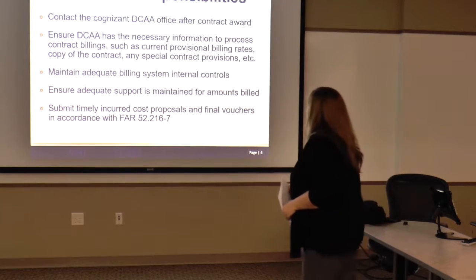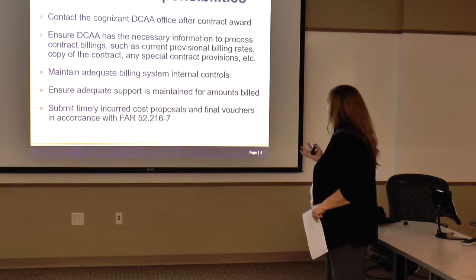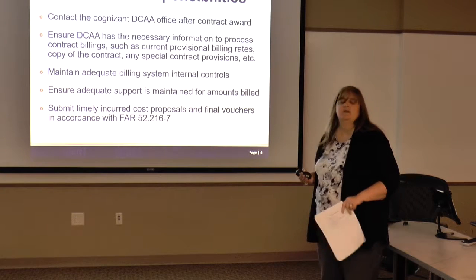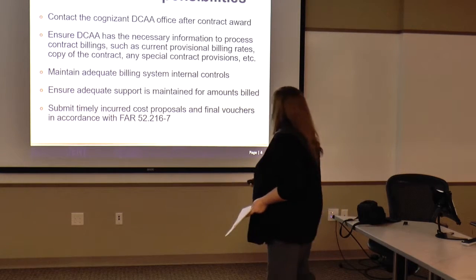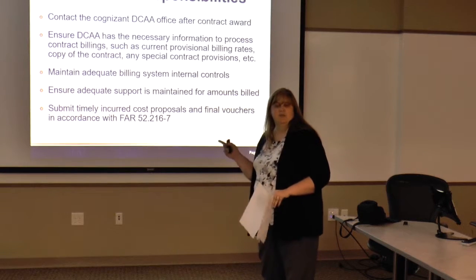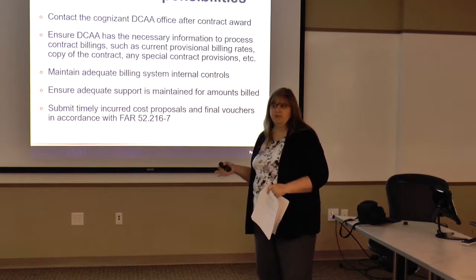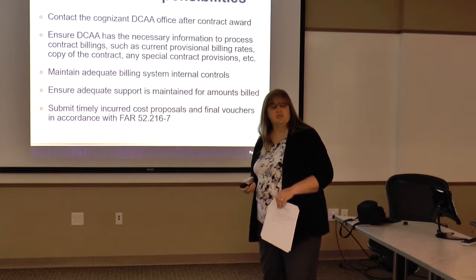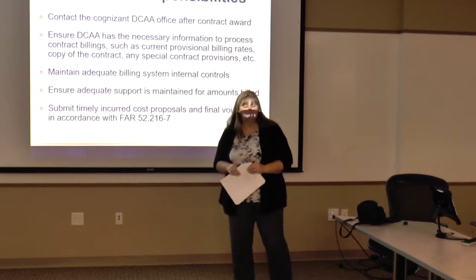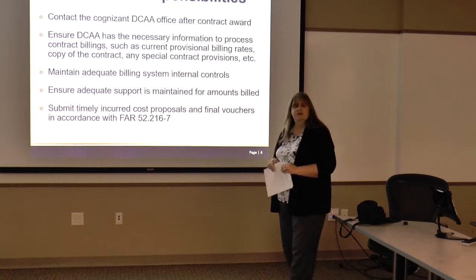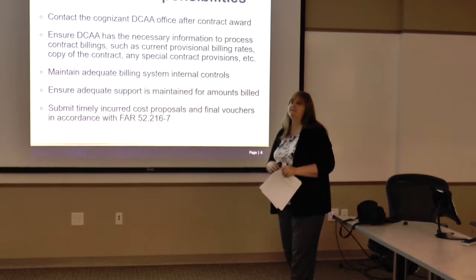What are your responsibilities as a contractor? First, when you get a contract award, please contact us and let us know — make sure we have the contract, contract billing details, and your provisional billing rates all set. You must maintain an adequate billing system. Make sure active support is maintained: if you submit a voucher with a dollar amount, we want support for that, such as your job cost ledger or time sheets. At year end, make sure you submit your incurred cost submission timely — FAR 52.215-2067 — within six months after your fiscal year end. If you won't meet that deadline, contact your ACO at DCMA and request an extension.